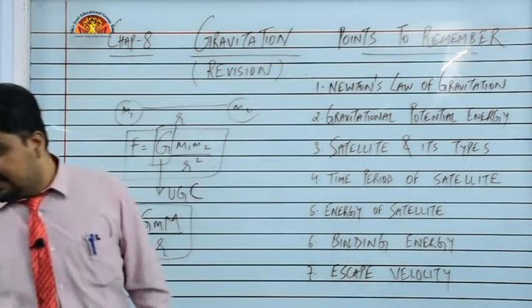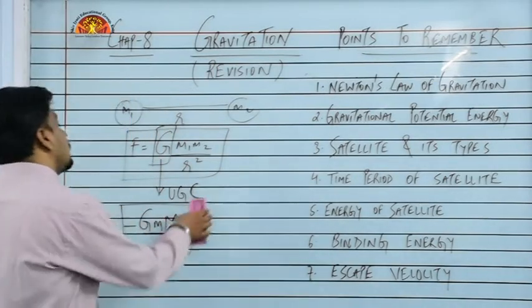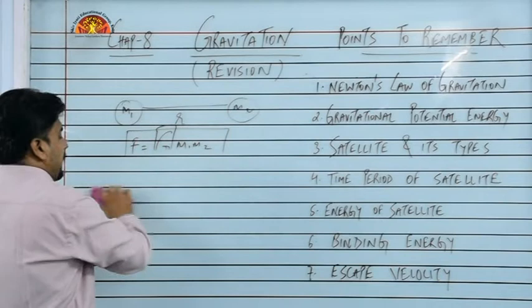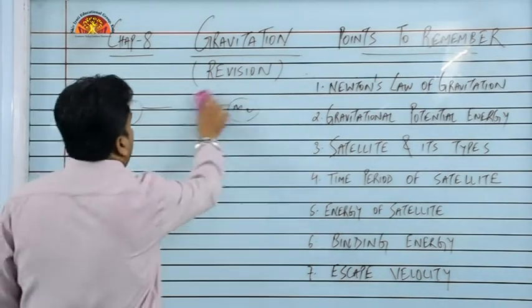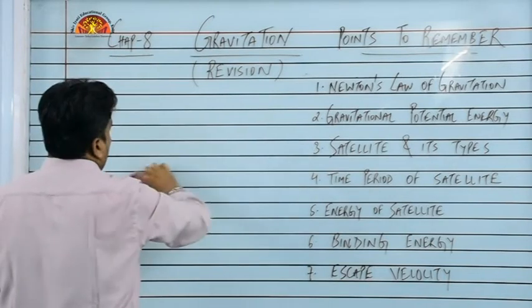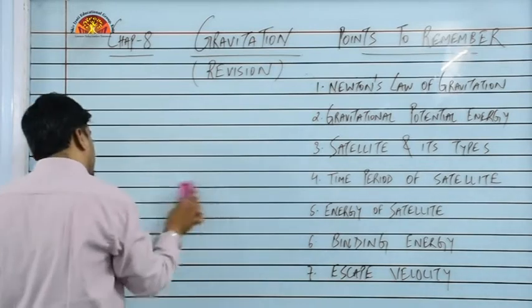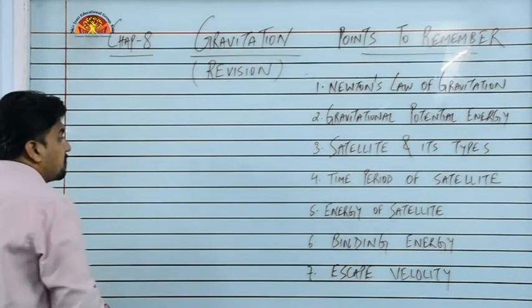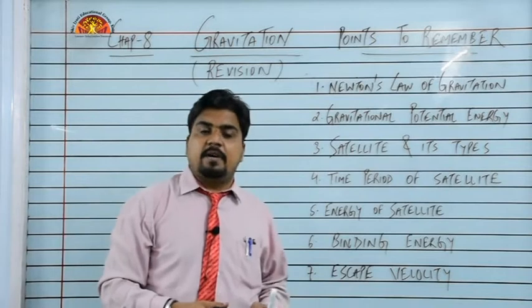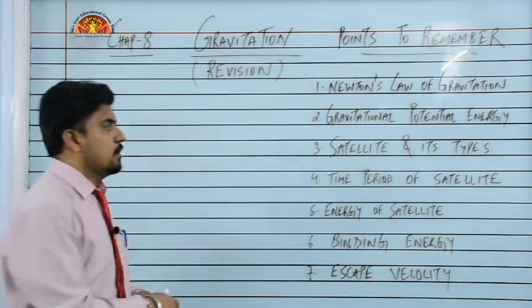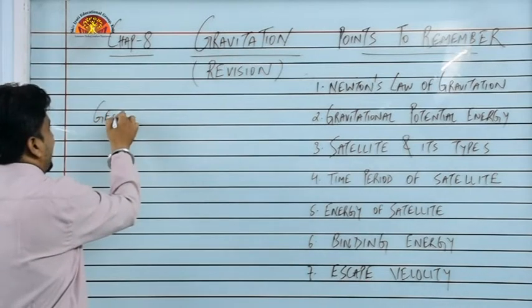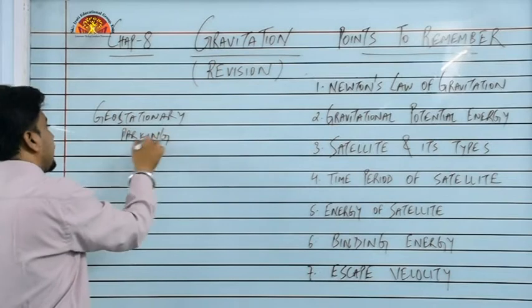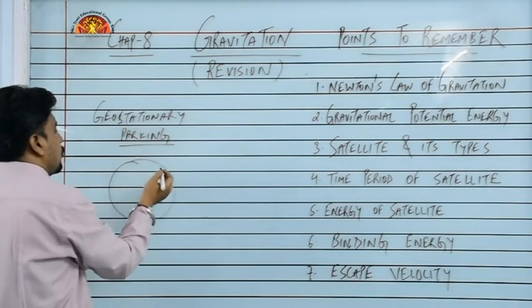Then we have satellite and its types. First of all, satellite - you should understand what is a satellite. Satellite is basically any heavenly body which is revolving around a planet. Any heavenly body which is revolving around a planet continuously. That would be termed as satellite. We discussed in detail that there are two types of satellites. One is geostationary, which is also called parking satellite. Parking satellite means it is at a fixed position with respect to earth. As earth rotates, this also rotates.